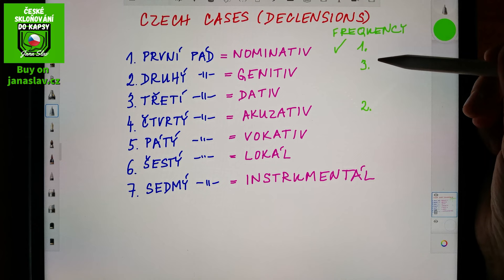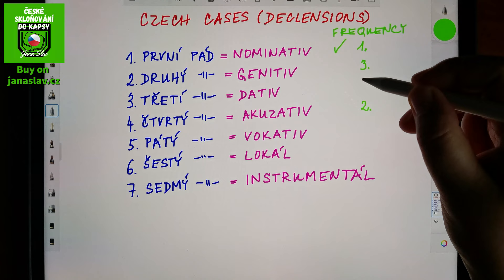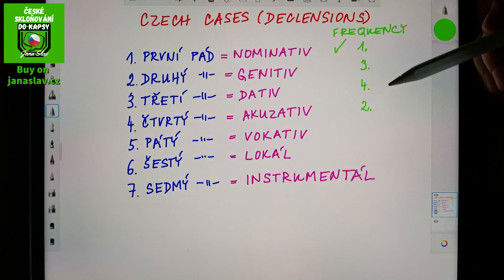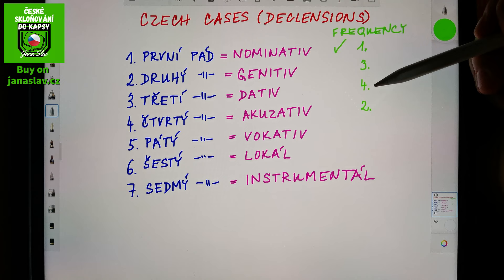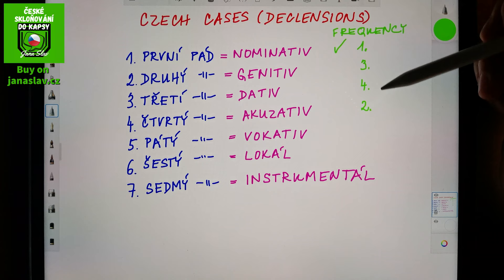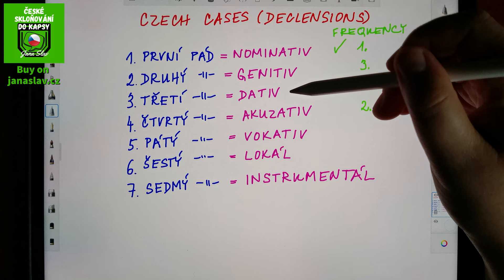The genitive is used a lot after many prepositions, and also when you talk about how much of something you have or need, or how many. After that, the dative would be number four. As you will see in the following videos, the dative is used for the so-called indirect object — for example in English when you say 'give it to me,' 'it' is the accusative, but 'to me' — to whom you are giving something — is in the dative case.